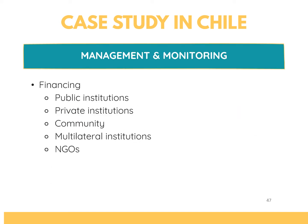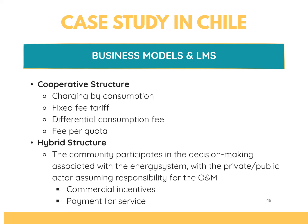Financing the project may need several entities involved, which may be from various institutions. Two business models were proposed for Chile. The cooperative structure means that the community will maintain the O&M of the microgrid, and they can opt to implement the following types of fee collection: charging by consumption, fixed fee tariff, differential consumption fee, or fee per quota. The hybrid structure involves a private or public actor to handle the O&M and can be given economic incentives. To give more details on how to achieve sustainability, we move to our next discussion about different management models.